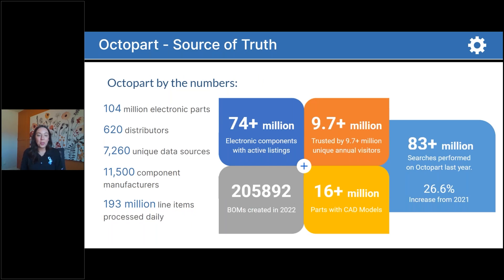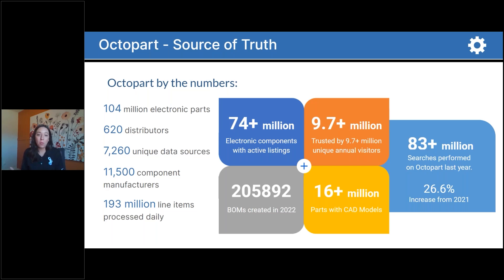Taking a quick dive into the scope of Octopart data — this is really where the benefit of Octopart plays in. We have thousands of partners across the industry feeding us data that we work to normalize. Over 74 million components with active listings on our website. We're trusted by millions of users across the industry to help find parts, make design decisions, download data sheets and CAD models, research alternatives, and ultimately click on offers and go to a distributor website for procurement.